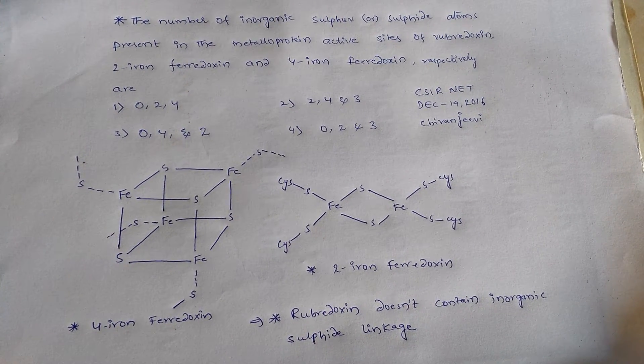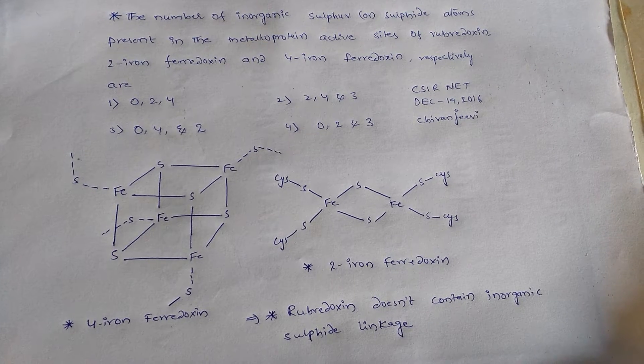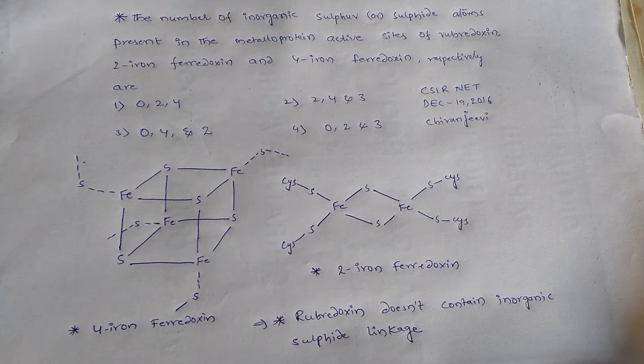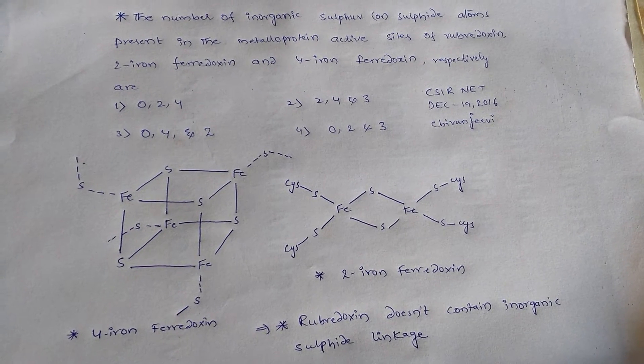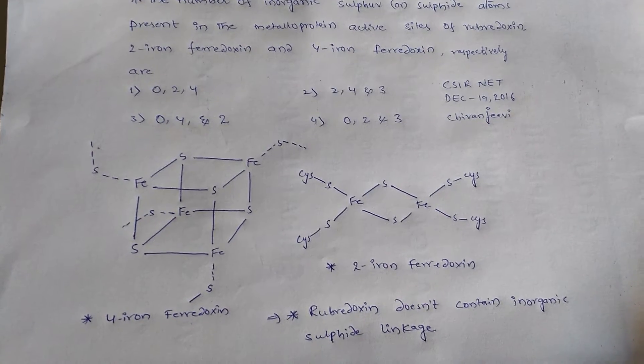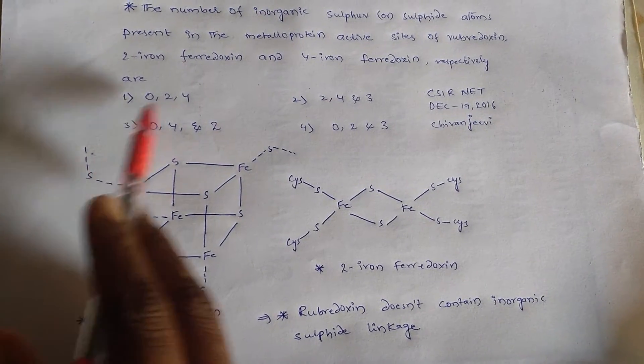The question is: the number of inorganic sulfur or sulfide atoms present in the metalloprotein active sites of rubredoxin, 2-iron ferredoxin, and 4-iron ferredoxin, respectively, are. We have four options.